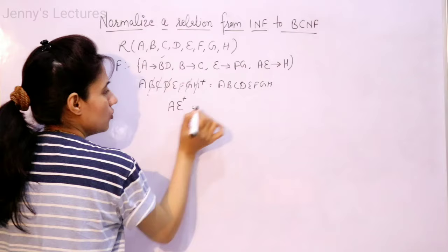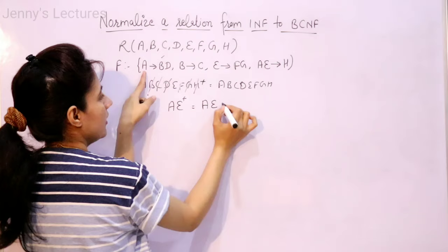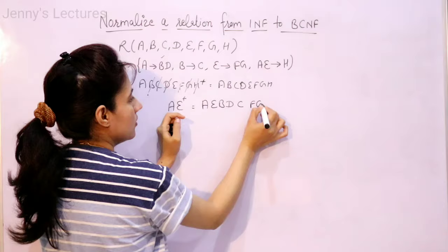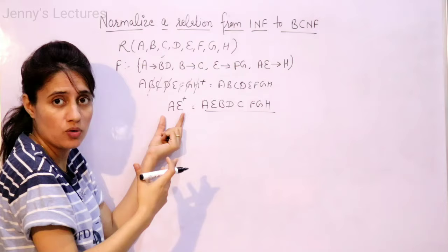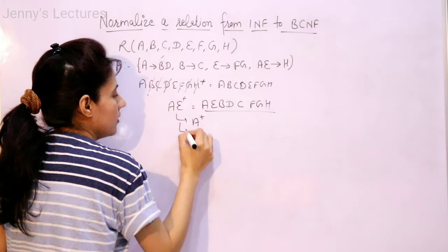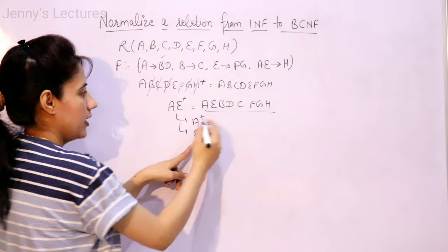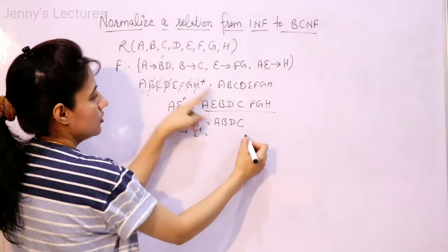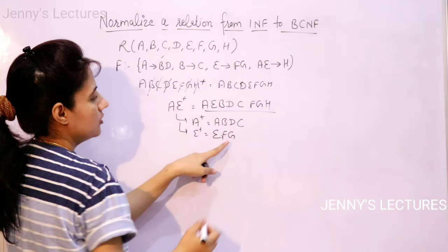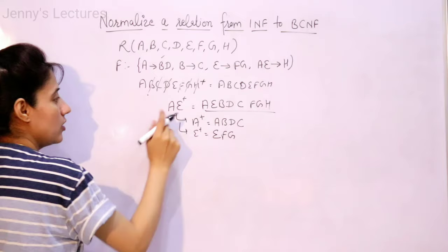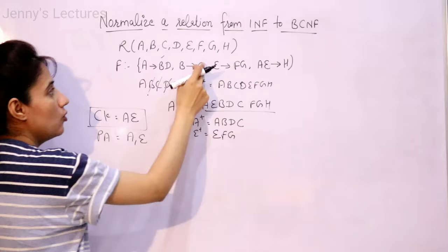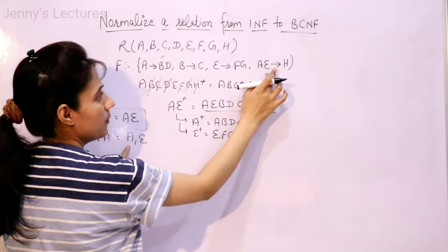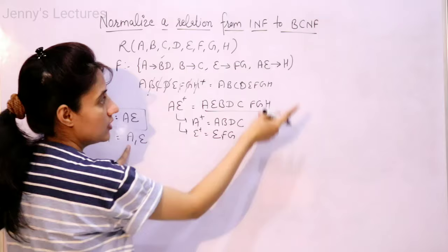Find out the closure of A and E. Using A, I can drive A, E; using A I can drive B, D; using B I can drive C; using E I can drive F, G; and I can drive H — all the attributes. So A and E is a super key. No proper subset would be a super key because A closure would only contain A, B, D, C and E closure only E, F, G. So A and E is our candidate key. Prime attributes are A and E. Since A and E are not on the right-hand side of any functional dependency, there is only one candidate key: AE.